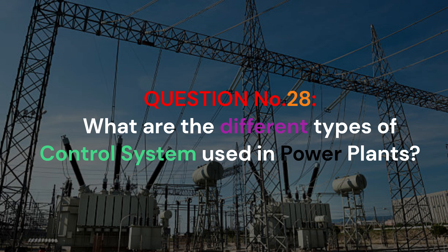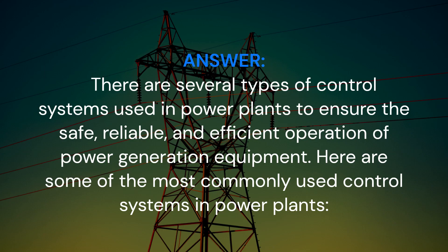Question number 28. What are the different types of control systems used in power plants? There are several types of control systems used in power plants to ensure the safe, reliable, and efficient operation of power generation equipment. Here are some of the most commonly used control systems in power plants.